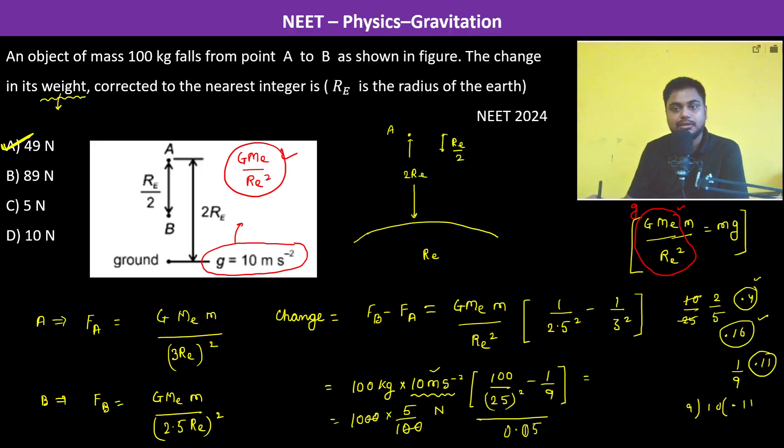So therefore the answer is A. And in questions what we can do is also take g to be 10 and then see the answer, whatever is the closest to it, because by taking 10 the calculation becomes easier. Thank you.